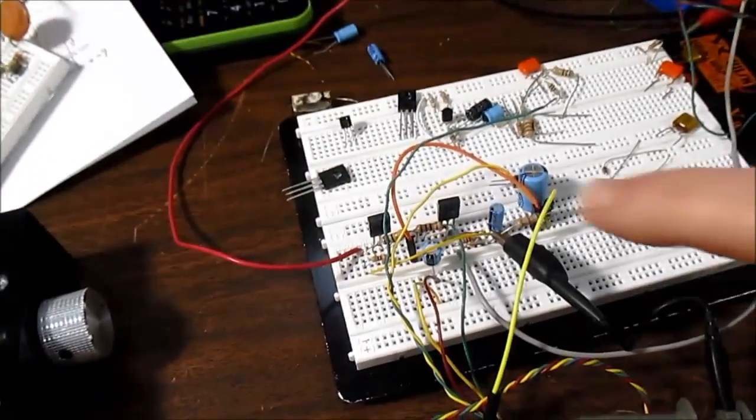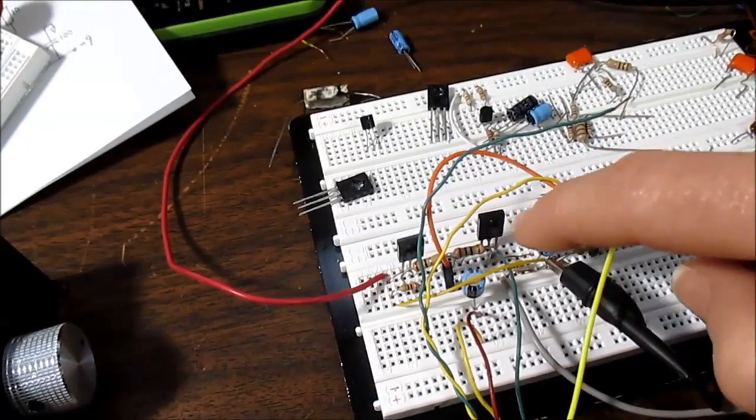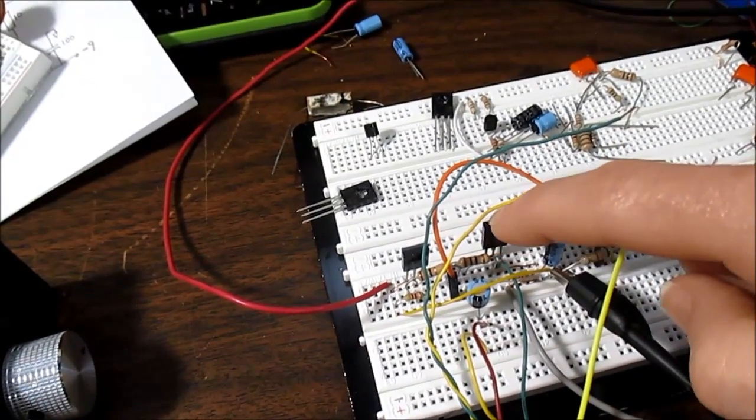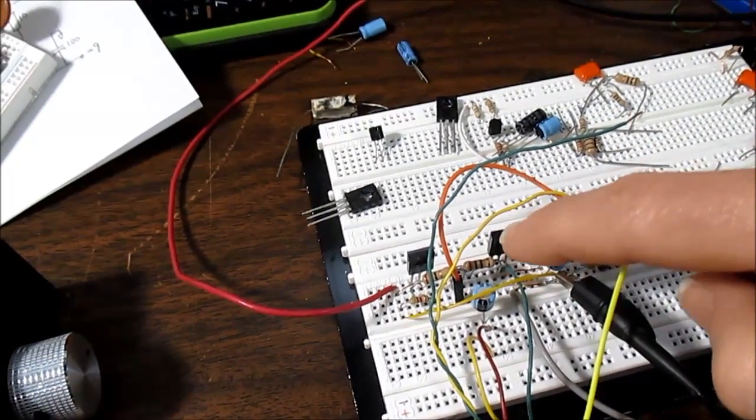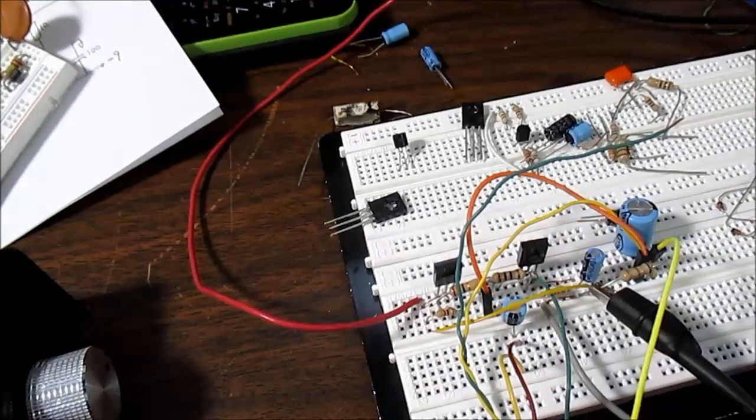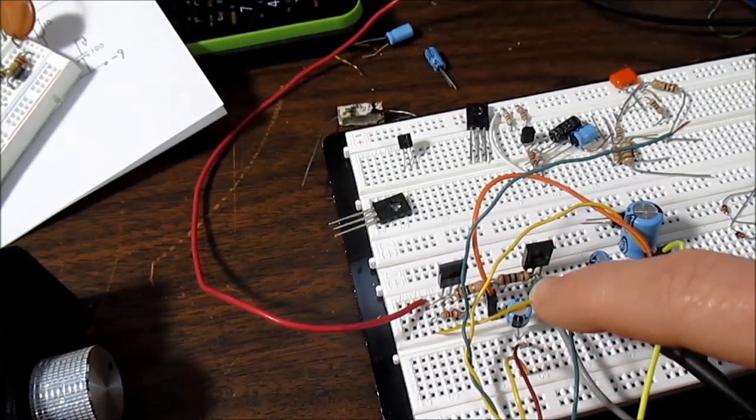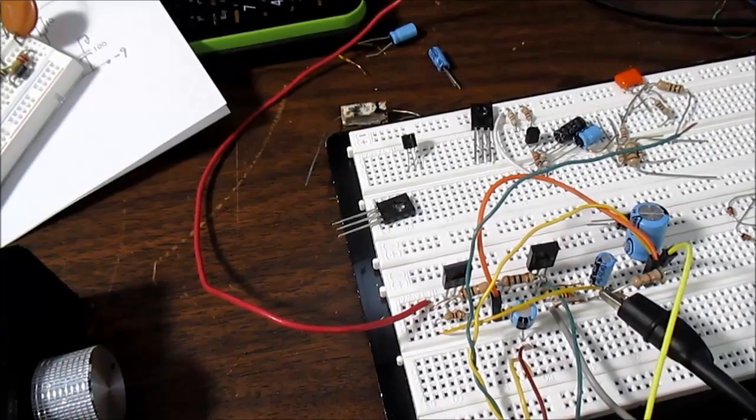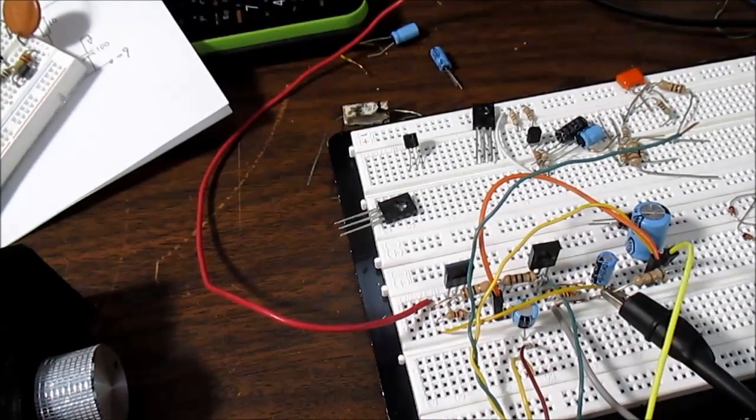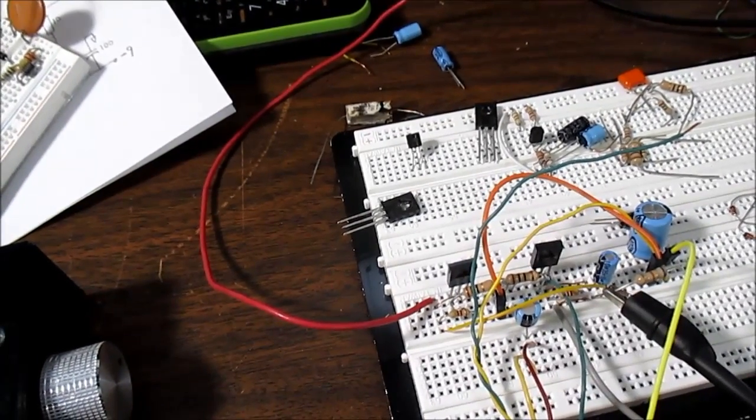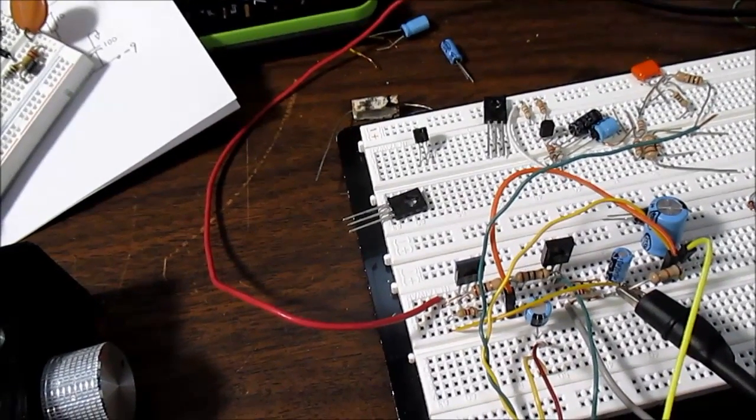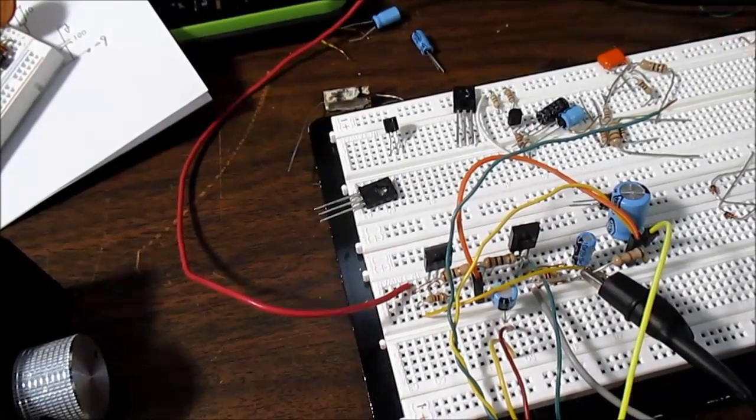You have to remember, this has no global negative feedback now. So you want this stage to be as clean as possible before we put the op amp front end on it and give it global negative feedback. So having it so clean, this thing should sound really amazing. That's the idea anyway.